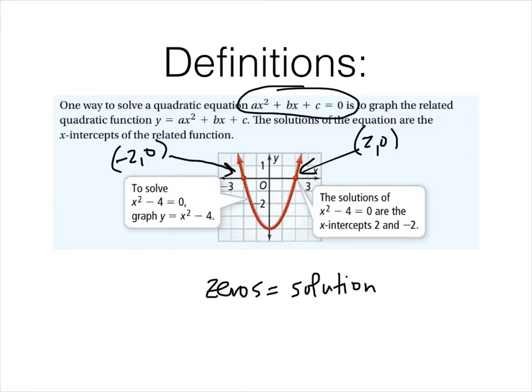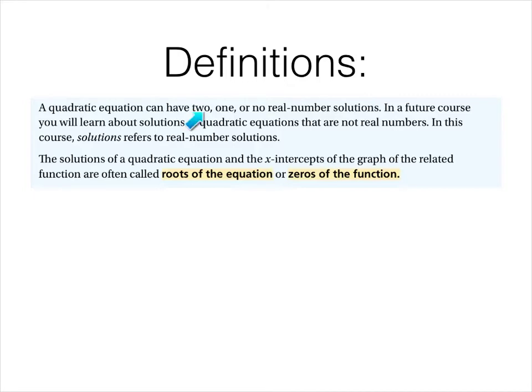Which is great if they all come out to integral answers that we can read from a graph, but they don't. A quadratic equation can have two solutions, one solution, or no real number solutions. In a future course you'll learn about solutions that are not real numbers, but in this course we only talk about real number solutions. The solutions of a quadratic equation are the x-intercepts of the graph of the related function, also called roots and zeros. So roots, solutions, and zeros are all the same thing, all the same thing as x-intercepts.